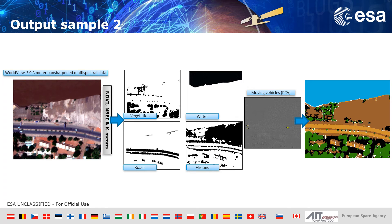The same is shown here for another area. Vegetation, water, ground, and moving vehicles are combined to give a really quick GIS view of the situation, allowing decision-makers to exclude or focus on specific areas.